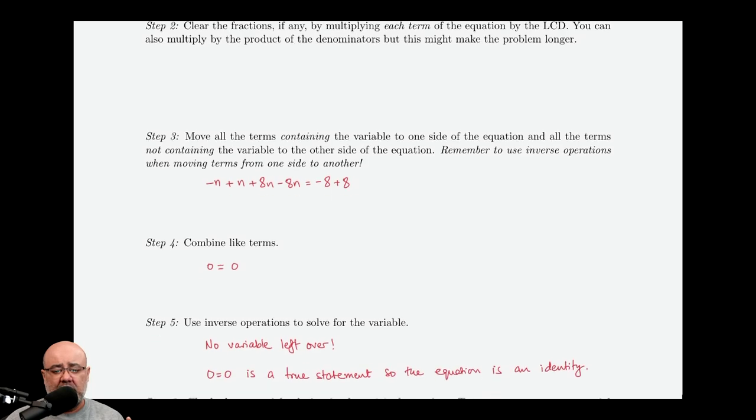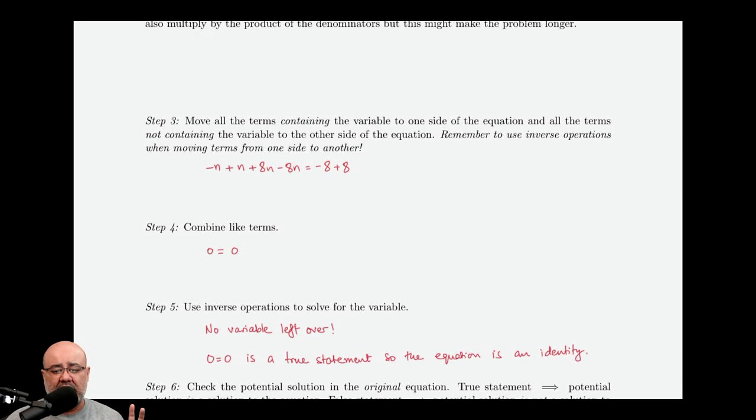Now, hopefully you remember that there's three outcomes that we could get when we're solving a linear equation. A variable equals a number, or a number equals a number that's either true or false. Now, 0 equals 0, there's no variables left over. There's no n's left over to deal with.